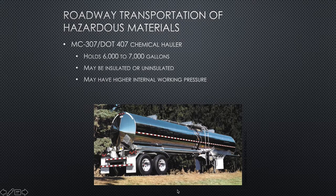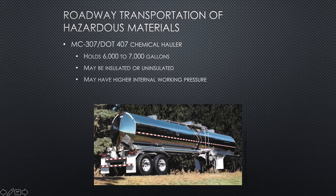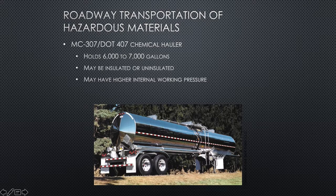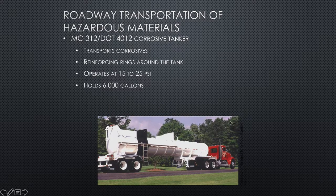A chemical hauler carries 6,000 to 7,000 gallons and may be insulated, with a higher internal working pressure — that's important because things can come shooting out under high pressure. It carries flammable liquids, mild corrosives, and poisons, and operates up to 35 PSI. You definitely want to treat this like a hazmat if you have any sort of leak.